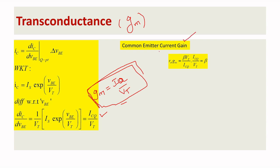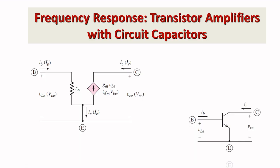Now we find the common emitter current gain. If you take the product of r_pi and gm: r_pi × gm = (βVt/ICQ) × (ICQ/Vt), the common terms cancel, giving β. So the product of r_pi and gm is nothing but β.